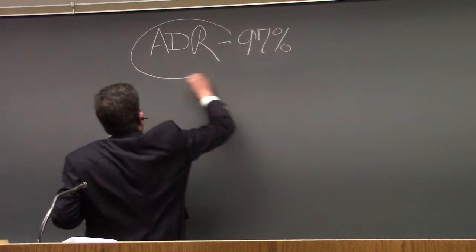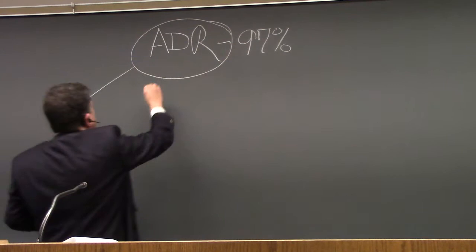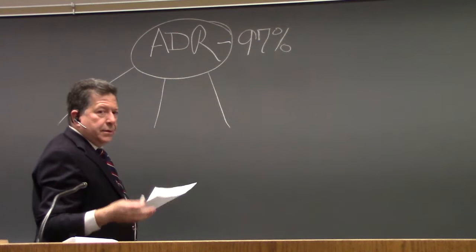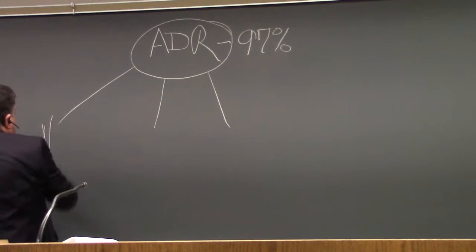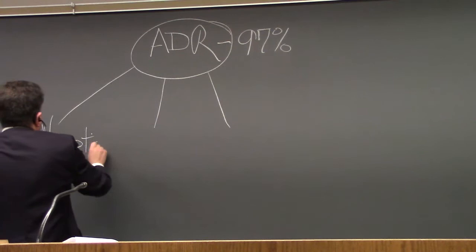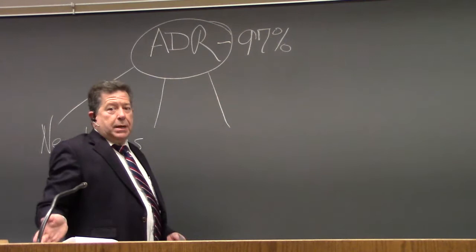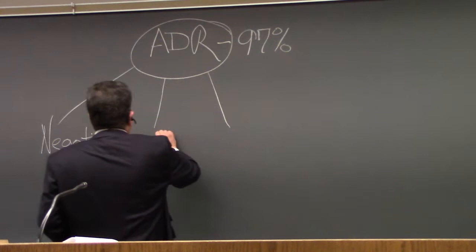So let's look at what ADR fundamentally is. ADR is basically an umbrella, and underneath that umbrella we have a number of different types of mechanisms we can use. The most basic is negotiation. Sometimes if that breaks down, we can move on to mediation, which is another form of ADR.